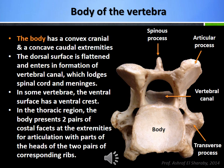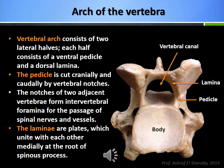In some vertebrae, the ventral surface of the body has a ventral crest. In the thoracic region, the body presents two pairs of costal facets at the extremities for articulation with parts of the heads of the two pairs of corresponding ribs. The vertebral arch consists of two lateral halves. Each half consists of a ventral pedicle and a dorsal lamina. The pedicle is cut cranially and caudally by vertebral notches. The notches of two adjacent vertebrae form intervertebral foramina for the passage of spinal nerves and vessels. The two laminae are plates which unite with each other medially forming the roof of the vertebral ring at the root of the spinous process.